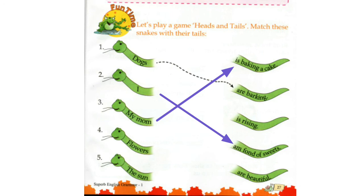Number four: Flowers. Flowers is a plural noun, so the helping verb will be Are. Flowers are beautiful.